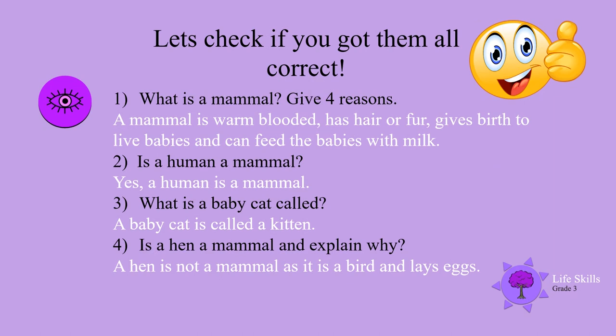Let's check if you got all the questions correct. Number 1: What is a mammal? Give four reasons. A mammal is warm-blooded, has hair or fur, gives birth to live babies, and can feed the babies with milk. Well done! Number 2: Is a human a mammal? Yes, a human is a mammal.